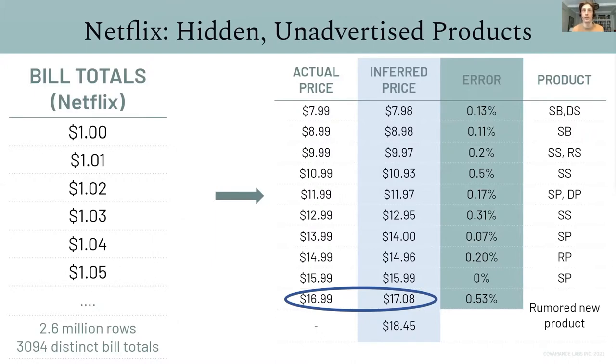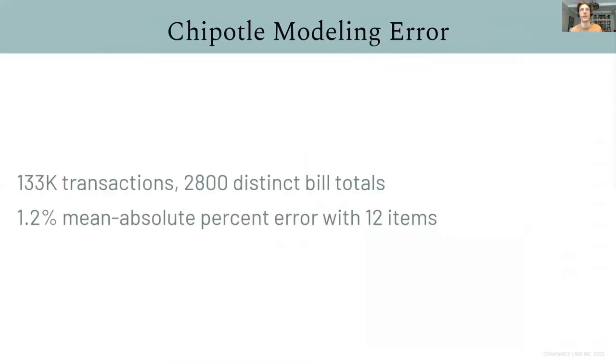Similarly, for $1,845, we don't know if that inferred price corresponded to a real product. Although, checking this year, it actually does now correspond to a real product. So, it's possible we saw an early release for Netflix's $18 product, which is now publicly available.